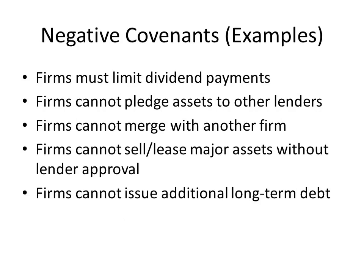Here are some examples of negative covenants. Firms must limit dividend payments. Why would bondholders care? Dividend payments use up cash that could be helpful in making coupon and principal payments. Even more sinisterly, firms could issue a large amount of debt and then pay out that entire amount as a special dividend to their shareholders, then file bankruptcy — causing a transfer of wealth from bondholders to shareholders. It's perfectly understandable why bondholders would want to limit dividend payments.